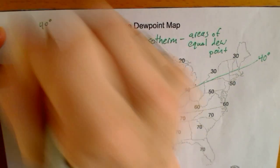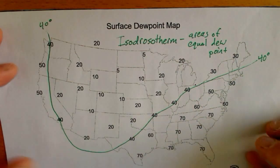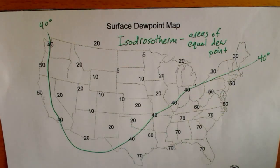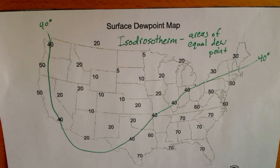This is where the air will not be able to hold any more moisture — this is where dew will form at 40 degrees. Now I'm going to have you continue the rest of the map and connect all of the other numbers, and you can check in on the next video to see how you did.